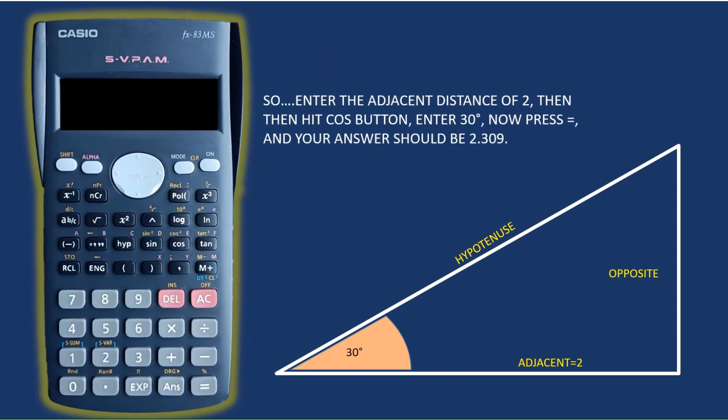So in this case you'll see the 2 button, hit your division button, hit your cos, then type in 30 and then hit equals, and your answer should be 2.309. So that's telling you that the length of the hypotenuse there is 2.309.